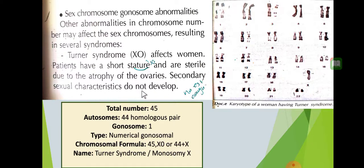Secondary sexual characteristics don't develop. Secondary sexual characteristics are the external features that indicate whether someone is female or male — for example, males develop a beard and a deeper voice. For females, there are external physical changes. So in Turner syndrome, secondary sexual characteristics don't develop, and there is no menstrual cycle, due to the atrophy of the ovaries.